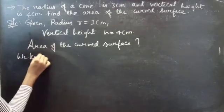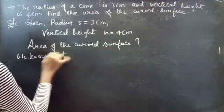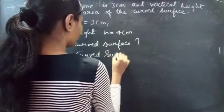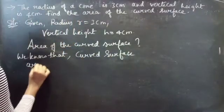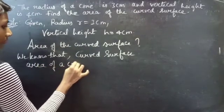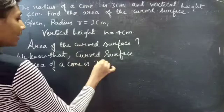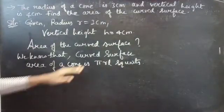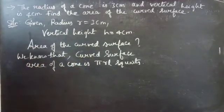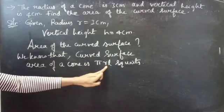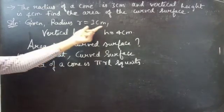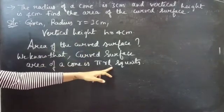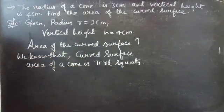We know that the curved surface area of a cone is pi r l square units. In order to find the curved surface area, we need the value of r and l. We have the value of r and we have the vertical height, but not the slant height. So firstly we will find the value of slant height.